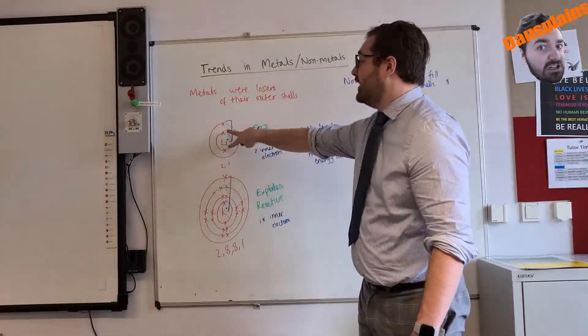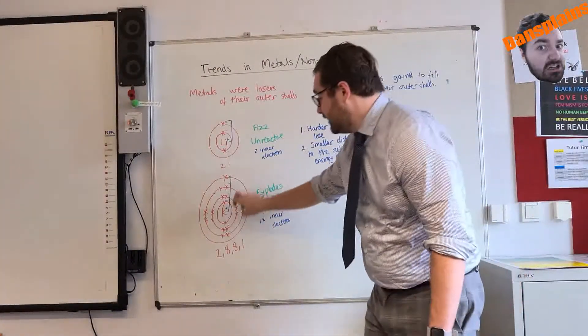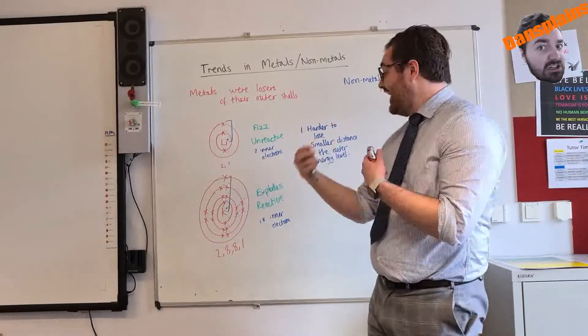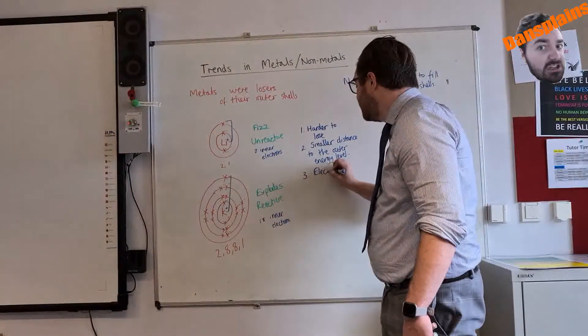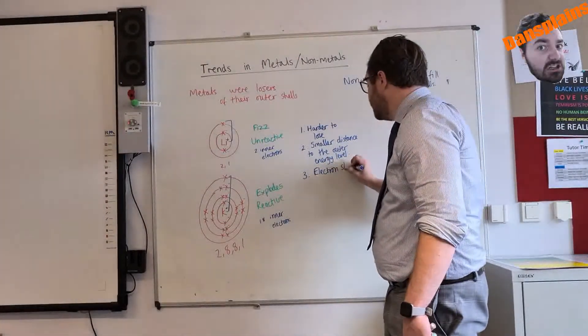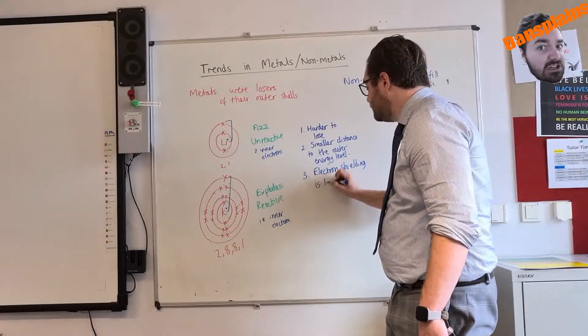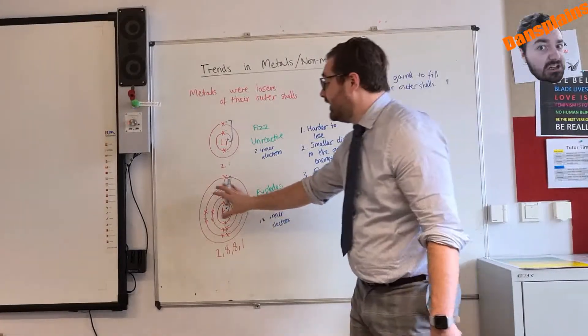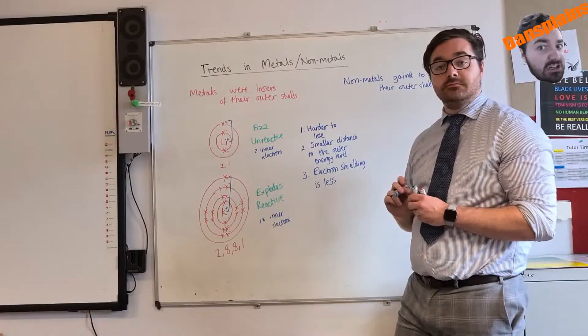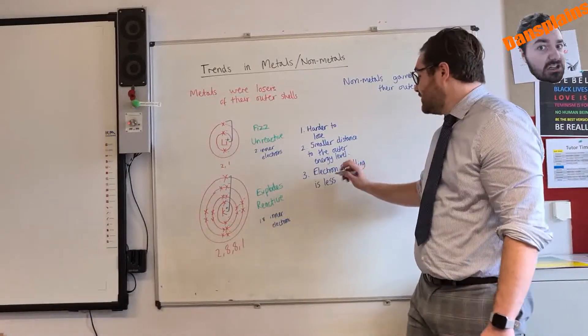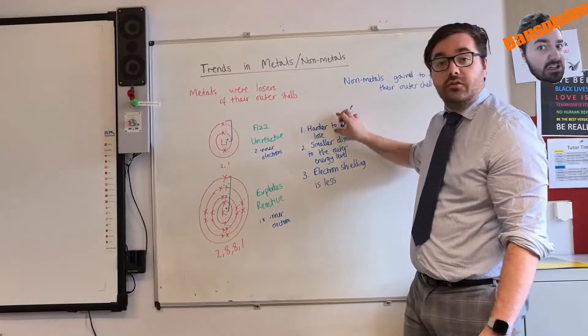That means these inner electrons will be repelling the outer electron. These inner electrons will be repelling this outer electron. So we have a word for it called electron shielding. And that means the electrons are shielding the positive charge of the nucleus from the outer electron. So if electron shielding is less, it is a lot harder to lose them.